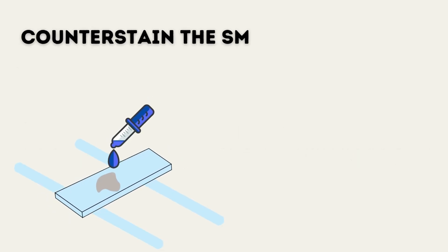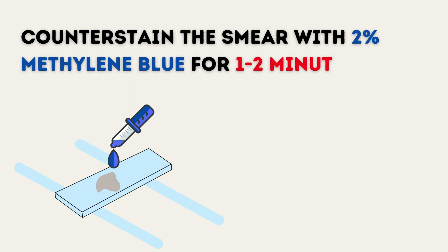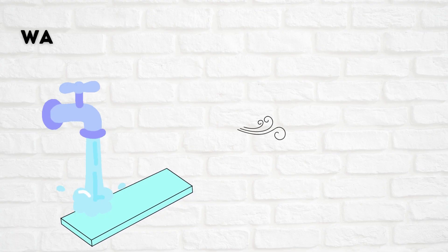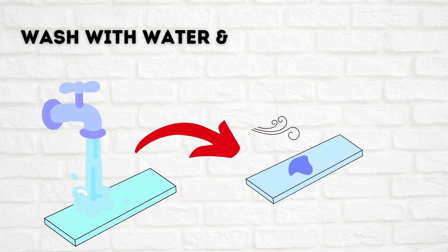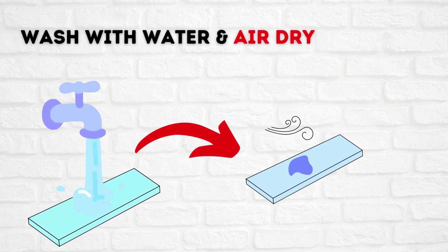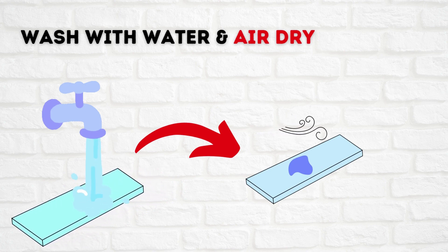The next step is counter-staining. Cover the smear with 2% methylene blue and allow it to act for 1 to 2 minutes. Then wash with tap water, allow to air dry, and the slide is ready for observation.